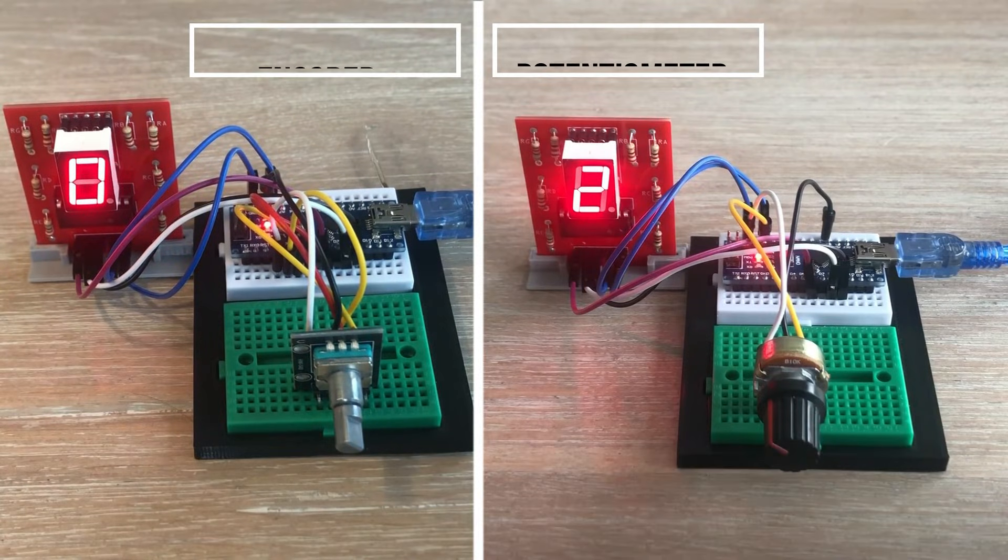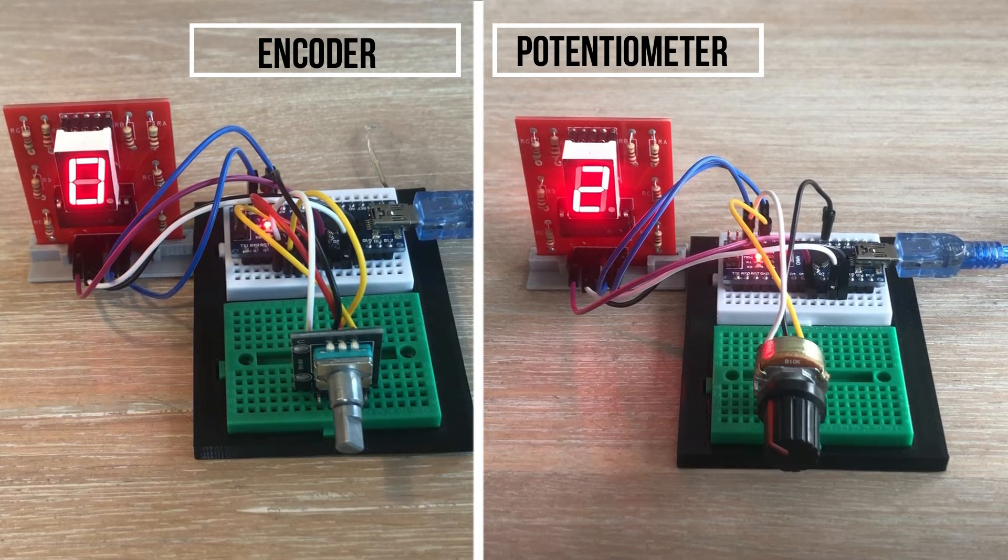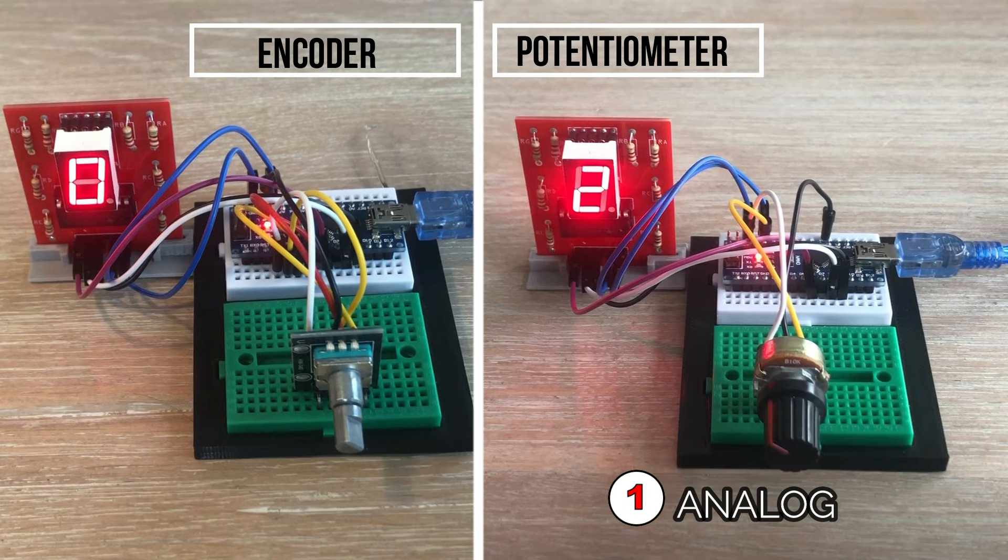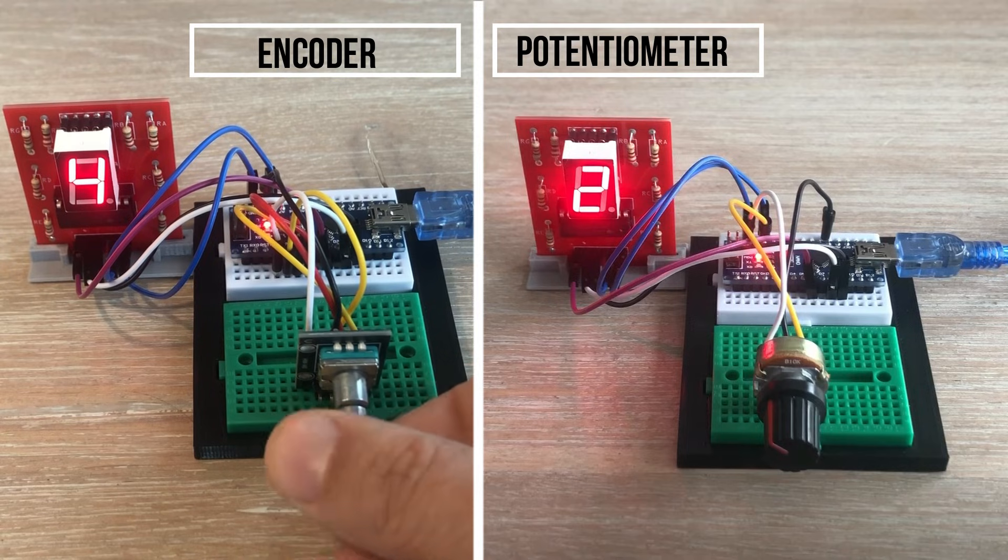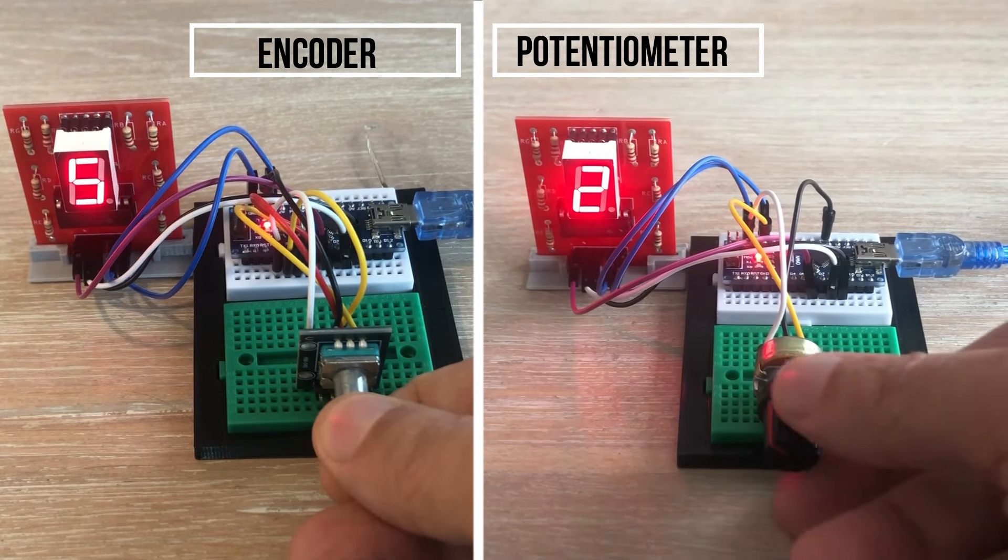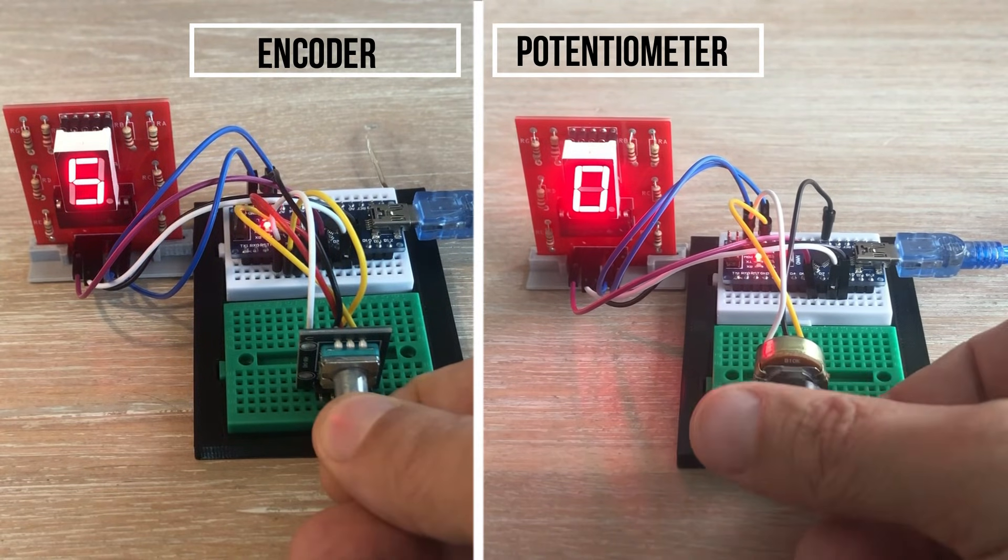So I think this is time to compare the encoder to potentiometer and pinpoint five major differences between the two. First and foremost encoder is a digital component and potentiometer is analog. So we use digital read method to read the value from encoder pin and we are able to use interrupts. For potentiometer we need to use analog method to read analog values from the potentiometer pin.